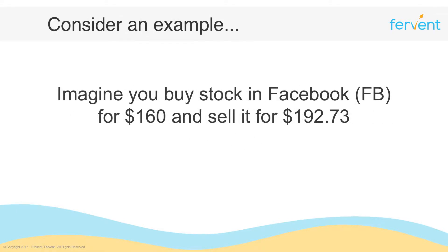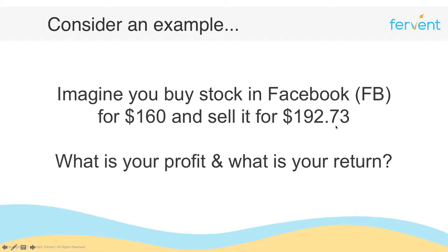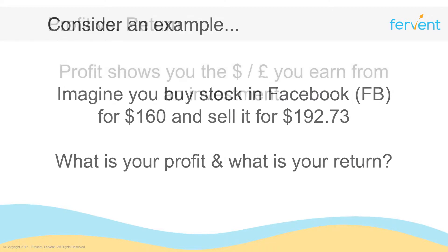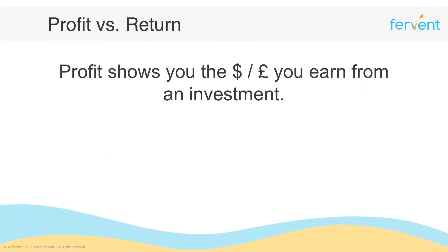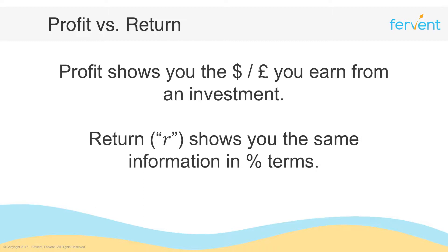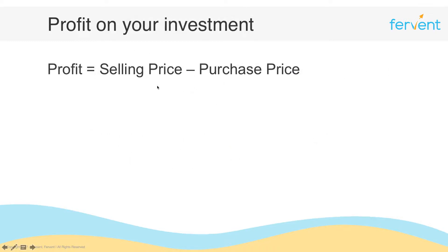Imagine that you buy stock in Facebook for $160 and sell it for $192.73. What is your profit and what is your return? Profit shows you the amount of money that you earn from an investment, expressed in dollars or pounds or whichever currency you're working with. The return shows you exactly the same information except that it's expressed in percentage terms. To get the profit, we start with the selling price, take away the purchase price, and that gives you the profit.